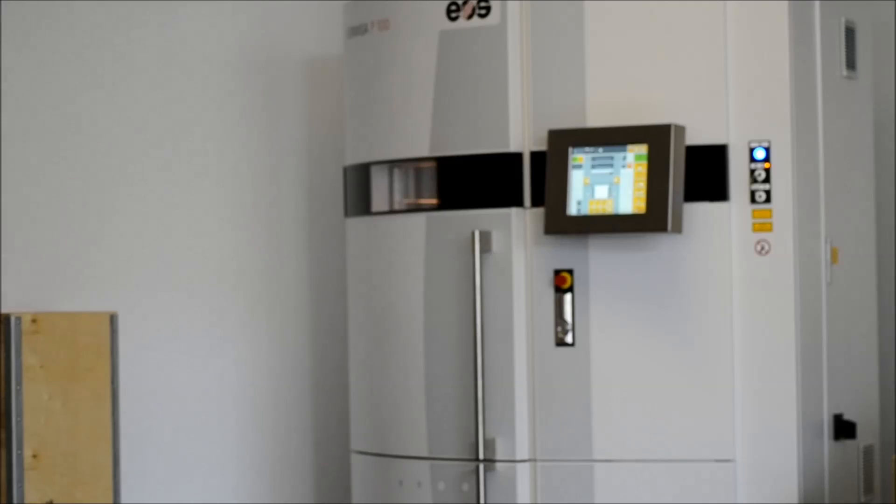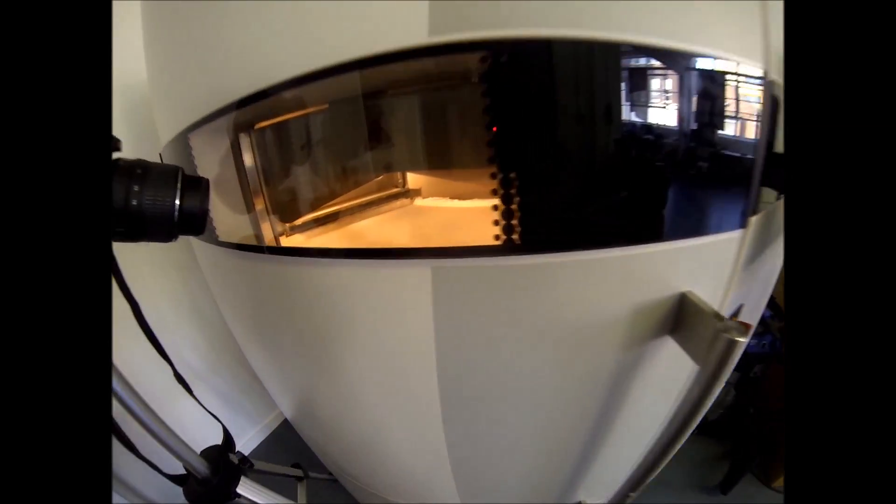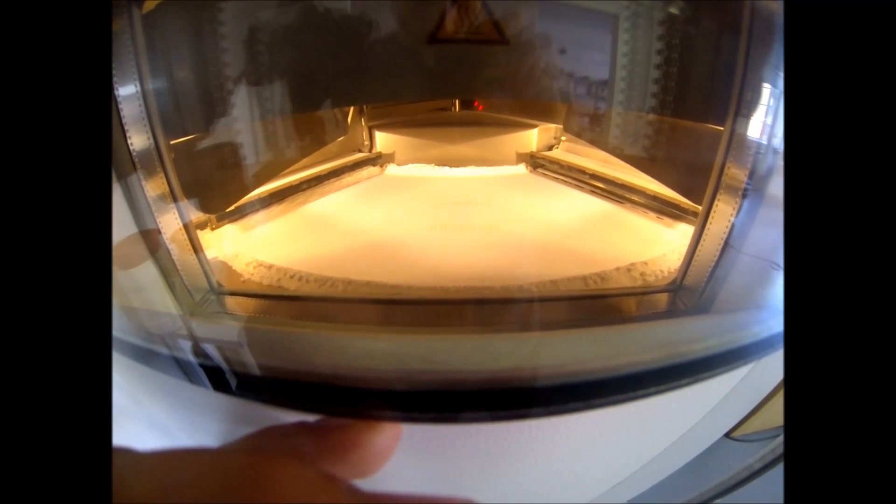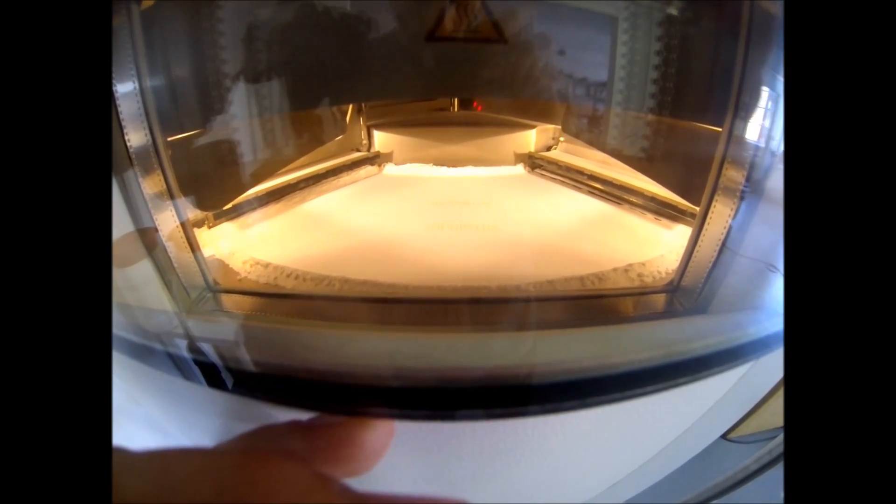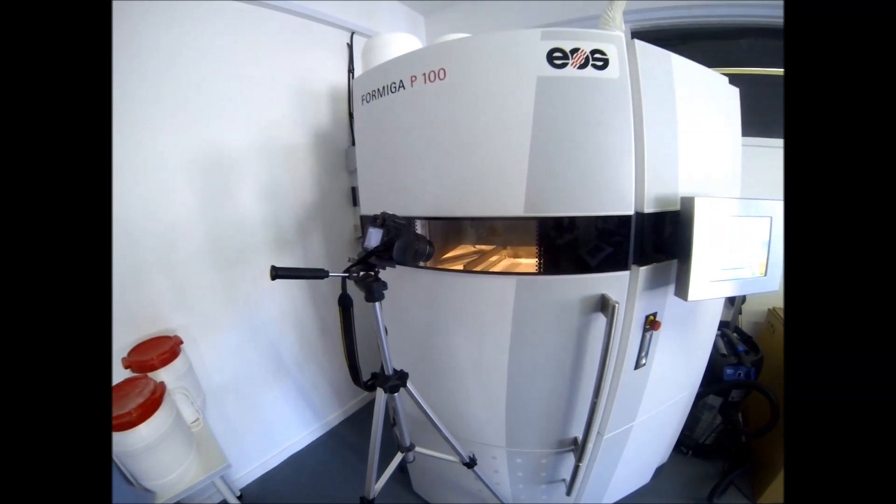The machine then takes this data and builds it up layer by layer. You can see here the nylon powder bed. This is heated just below 170 degrees. Lasers are then fired in, tipping it just over the melting point at just the right place. These lasers are effectively coloring in the cross sections.